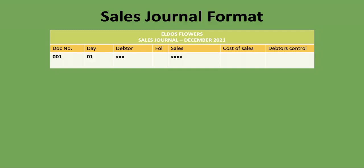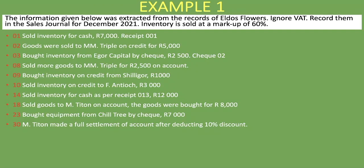We're told that the information below was extracted from the records of Eldo's Flowers. We are asked to ignore VAT and to record transactions in the sales journal for December 2021. Inventory is sold at a markup of 60%, which will help us calculate our cost of sales and our sales. Remember, we're only going to focus on goods that were sold on credit — everything else we leave out.